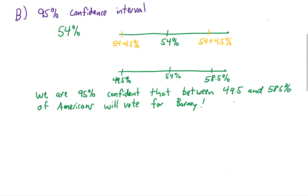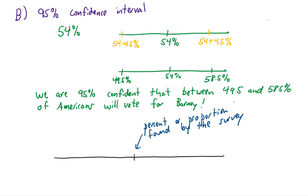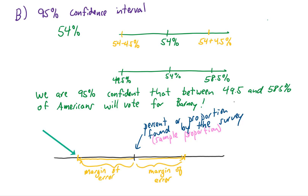Let's generalize this. In every one of these problems, we'll have a number line with the percent or proportion found by the survey — also called the sample proportion — right in the middle. Based on how many people were surveyed, we calculate the margin of error using 100 over the square root of n. We add the margin of error to the sample proportion to get the upper bound, and subtract it to get the lower bound of the confidence interval.